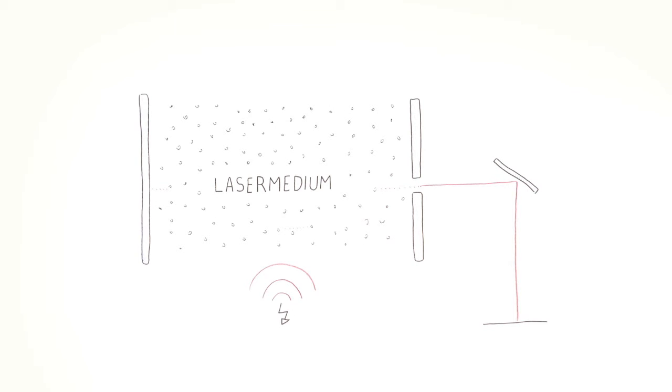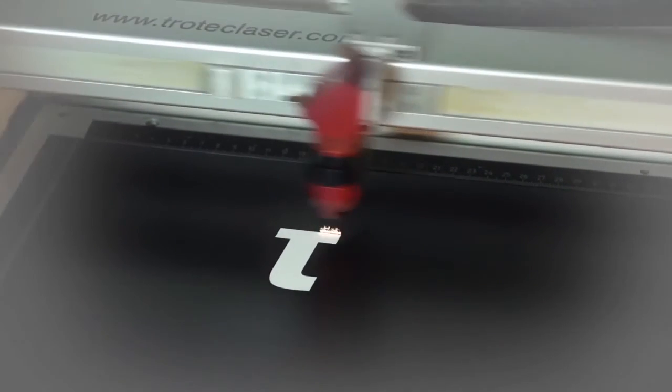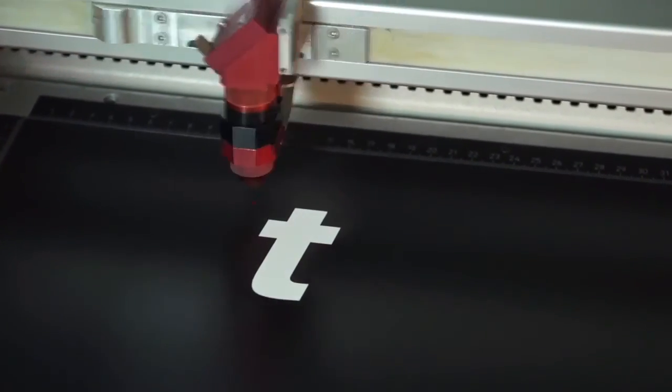This beam can leave the laser through the partially transmissive mirror, and is directed onto the material, where it engraves, marks, or cuts the desired motif.